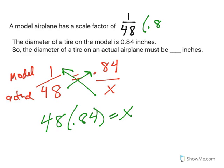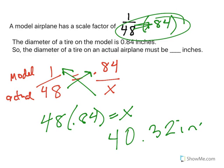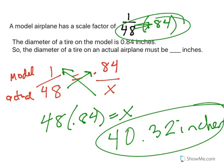That's thinking that we're just going to take the ratio of 1 over 48, multiply by the 0.84, and that gives us the actual. So we're at 40.32 inches. And that's it.